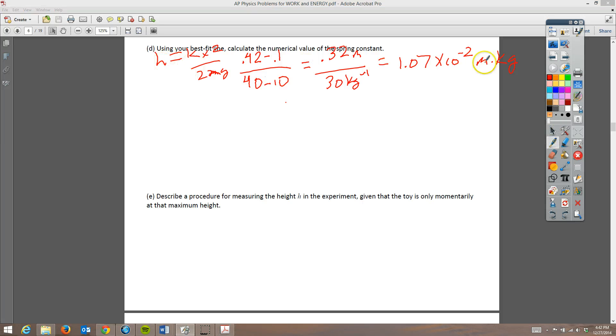The slope, if we notice here, is the height times the mass. So that would be h times m. So we can rewrite this. h times m, which is really the slope, is equal to kx squared all over 2g. And they want us to solve for k.